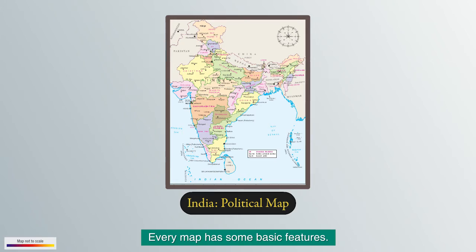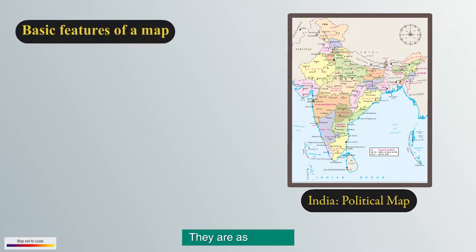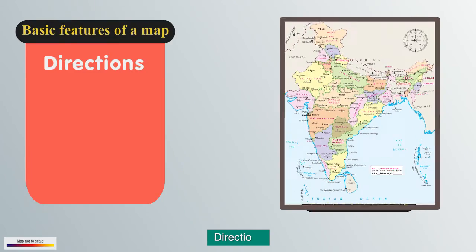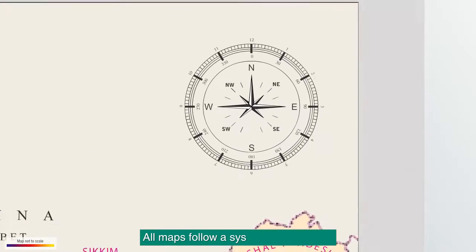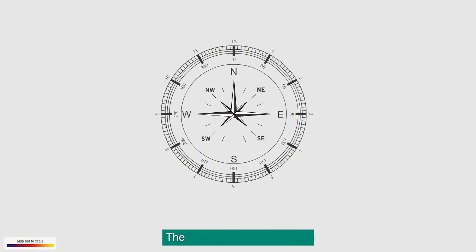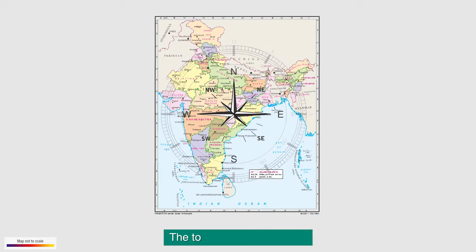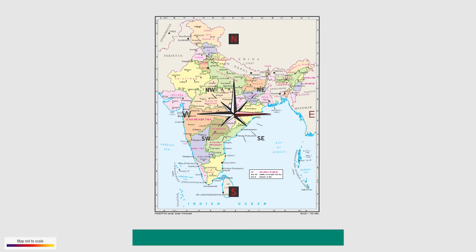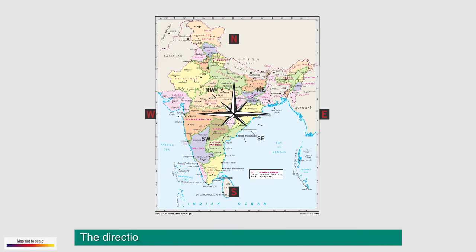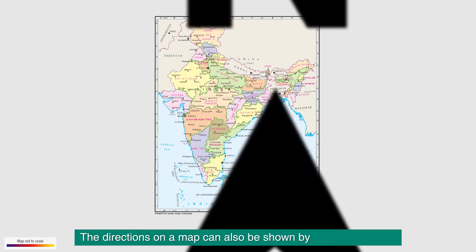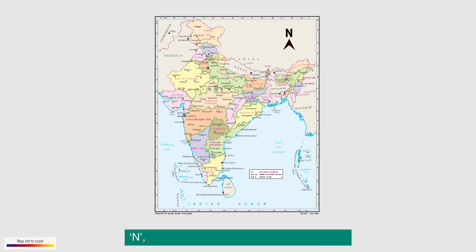Every map has some basic features. Directions: all maps follow a system of directions. The four major directions are North, South, East, and West. The top of the map is North, the bottom is South, East is to the right, and West is to the left. The directions on a map can also be shown by an arrow marked N, which points towards the North direction.